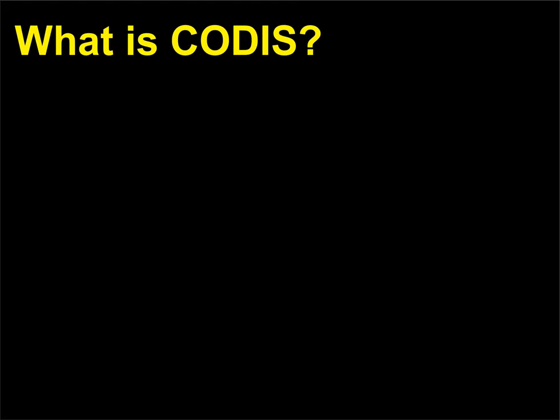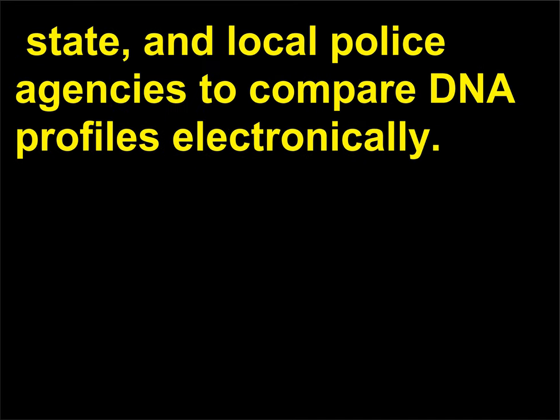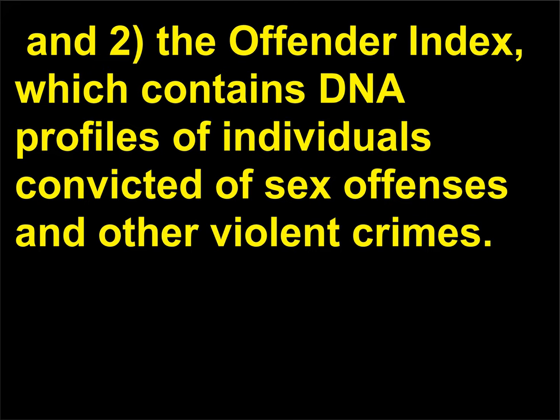What is CODIS? CODIS is the FBI laboratory's Combined DNA Index System, which allows federal, state, and local police agencies to compare DNA profiles electronically. CODIS uses two indexes: one, the Forensic Index, which contains DNA profiles from crime scenes; and two, the Offender Index, which contains DNA profiles of individuals convicted of sex offenses and other violent crimes.